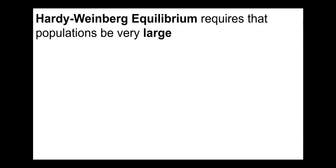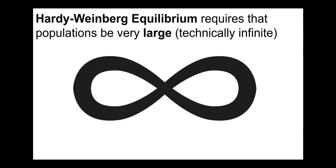An important thing about Hardy-Weinberg equilibrium is that for it to be literally true, populations have to be very, very large — technically infinite. Often a large population is close enough, but to be literally true the population has to be infinitely large. The converse is that forces like genetic drift are stronger when populations are small.